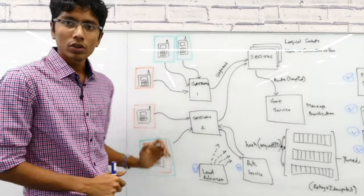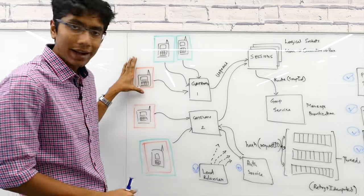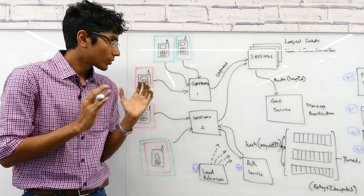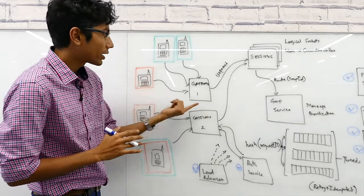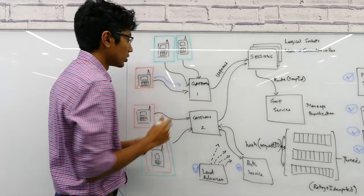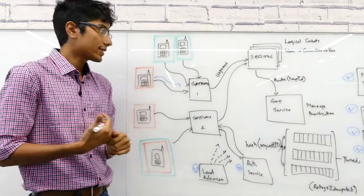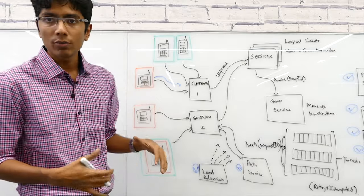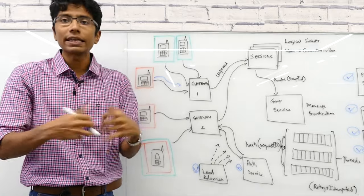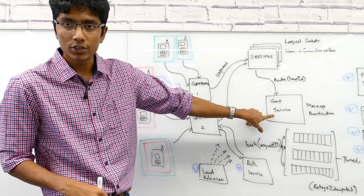Now you can see five users drawn here — the red users are in one group and the green users in the other. Whenever a user from the red group sends a message, it should go to all other red users. This is group messaging. The red user is connected to gateway one, while the other red users are connected to gateway two. If the session service stores all the information for all groups, it becomes too complicated — so we decouple that information into a separate group service.